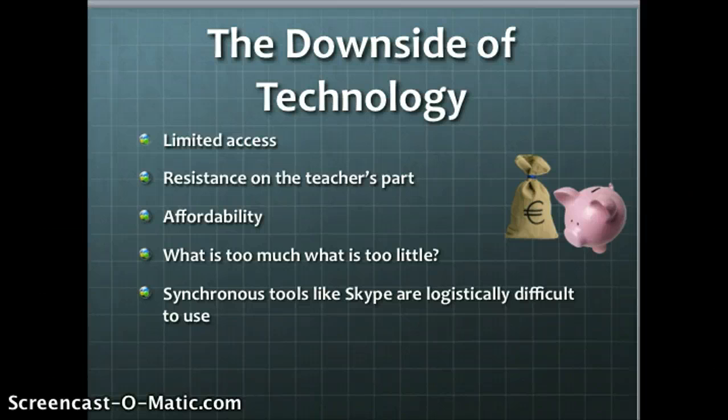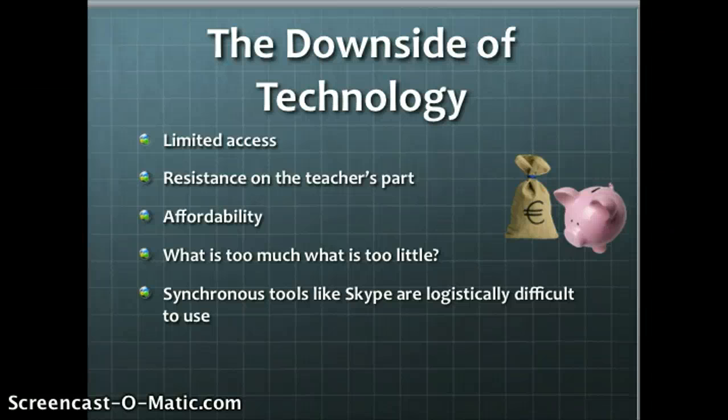We can't talk about the good without addressing the bad, so these are some of the negative themes that came up in the research. Number one is access — not everybody has access to the internet or the money to pay for smartphones and tablets, which is a major issue when trying to implement technology use in the classroom, as it may not be appropriate for everybody.